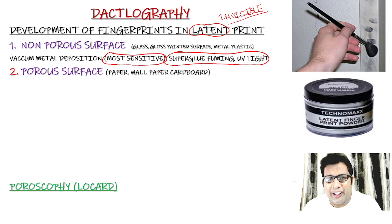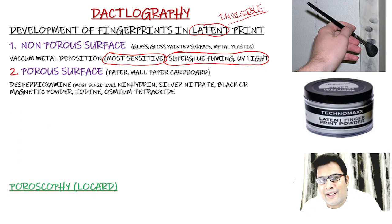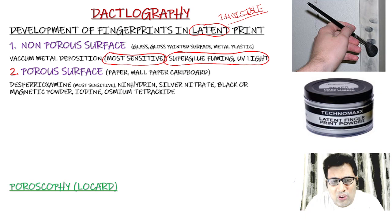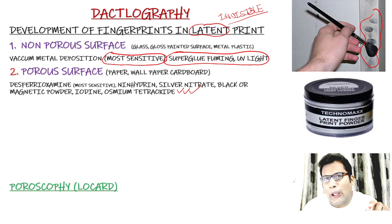For porous surfaces like paper, cardboard, or crime scene walls, we can use desferoxamine, which is the most sensitive one, ninhydrin which gives a purple color, silver nitrate, black powder, magnetic powder, iodine fuming, and osmium tetroxide. All these are used in case of porous surfaces. Development using black powder is commonly shown at crime scenes.